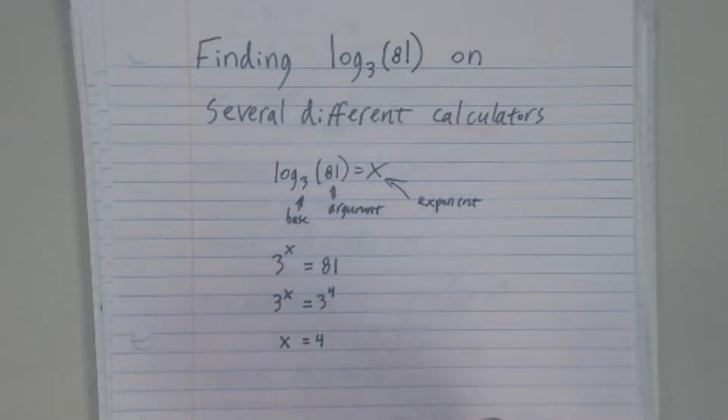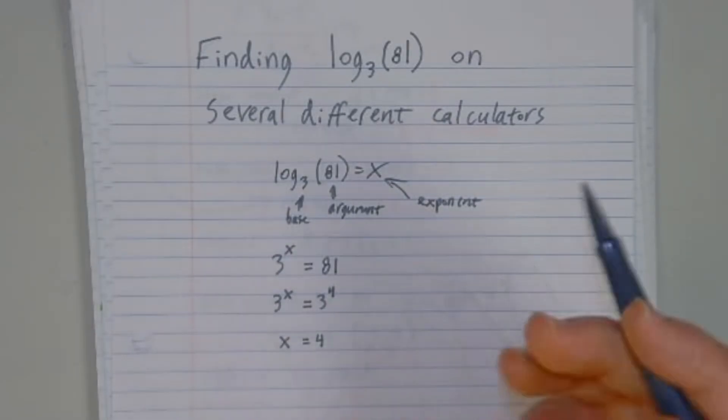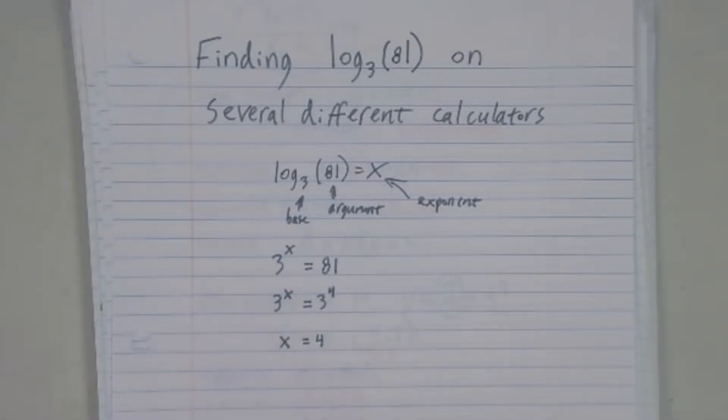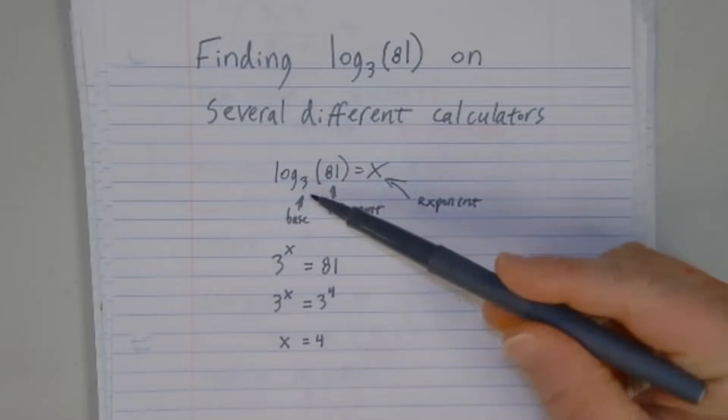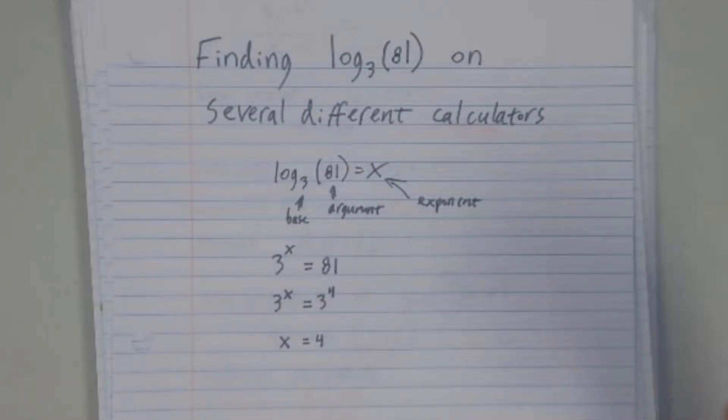So now that I know this is one of the ones that has an integer answer, and the other nice thing is every integer in this problem is different. I've got a 3, I've got an 81, and I've got a 4. So this will let me know if I've done it correctly by seeing if I get 4.